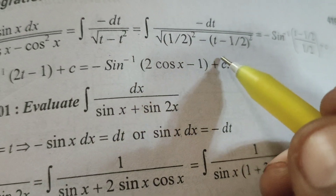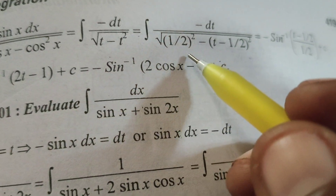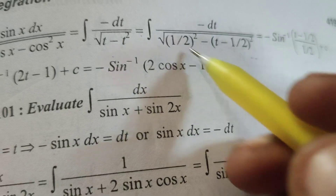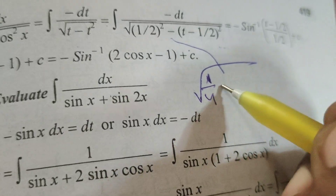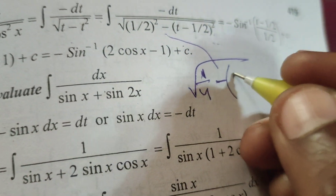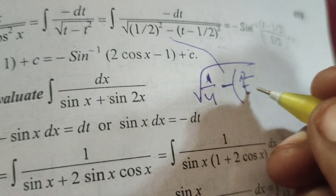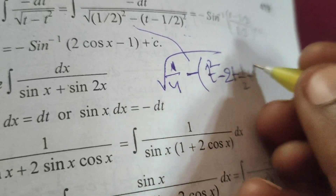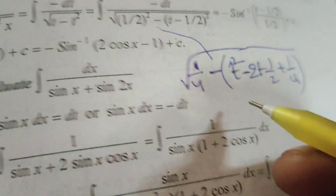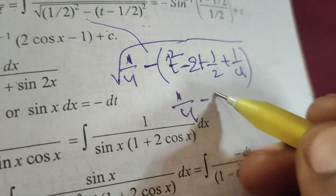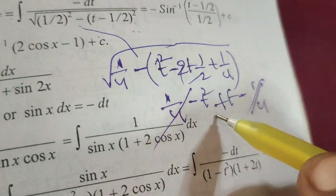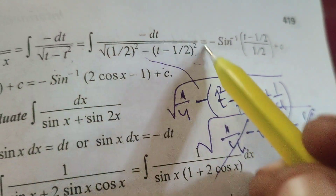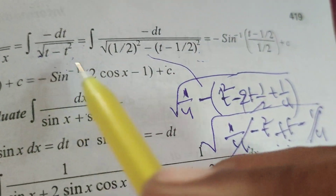Now simplify t minus t² by completing the square. Write it as (1/2)² minus (t minus 1/2)². Using the (a - b)² formula: 1/4 minus t² plus t minus 1/4 plus 1/4 gets cancelled, giving root of t minus t².